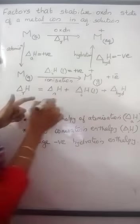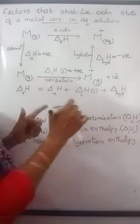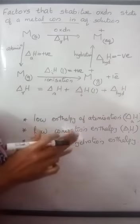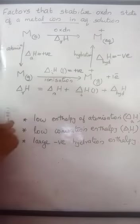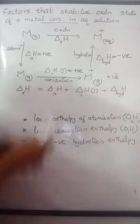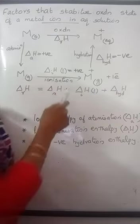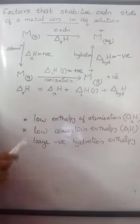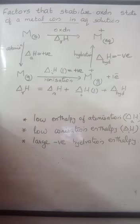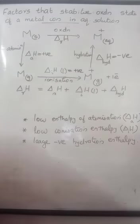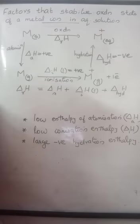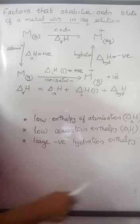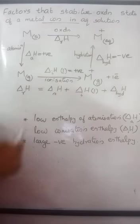If the sum of all these values is negative, meaning after all these processes a certain amount of energy is released, the reaction is feasible and this particular oxidation state is stable. If the sum is positive, meaning we have to give energy, the reaction is not feasible and the stability of that oxidation state is very less. So the factors that stabilize the oxidation state are low enthalpy of atomization, low ionization enthalpy, and large negative hydration enthalpy.